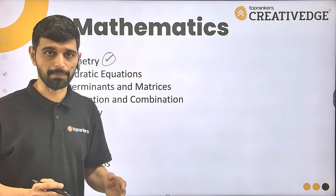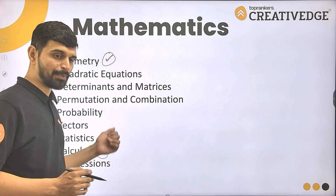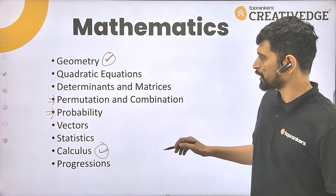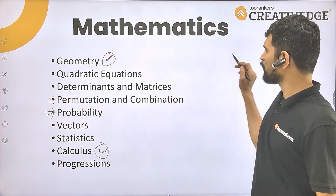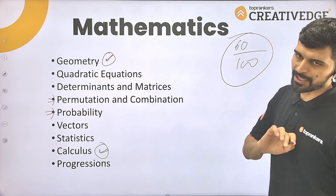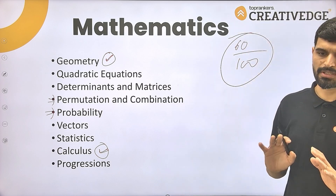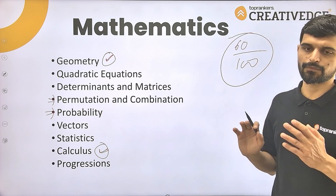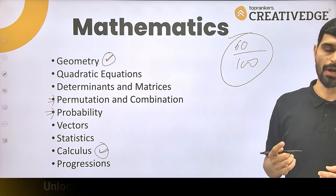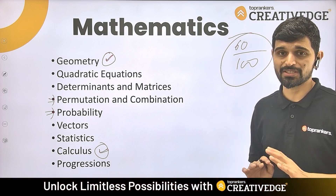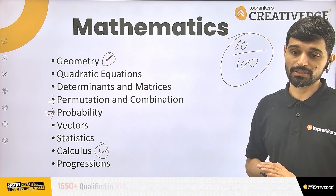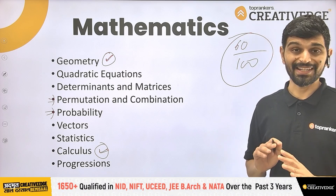If you prepare these topics well, a target of 60 out of 100 in the mathematics section is a considerable and achievable goal. You should ensure that at least 15 questions are accurately marked. That is the key target to work toward, and it needs to be done meticulously.